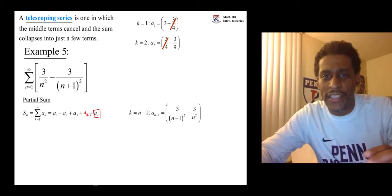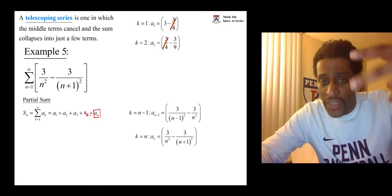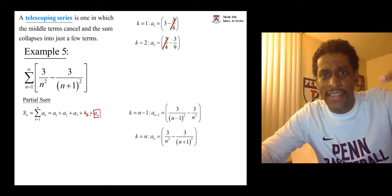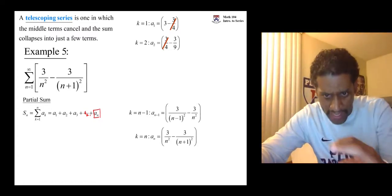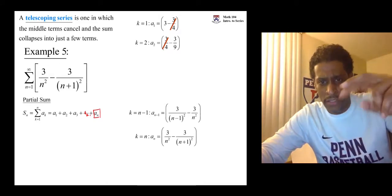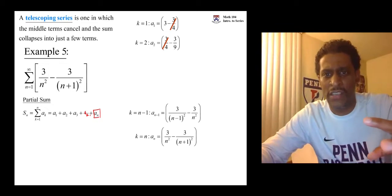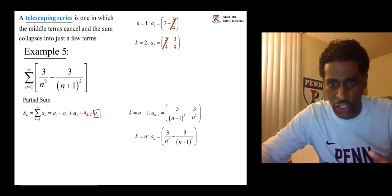So what you do basically is if it took you two terms to get your cancellation, your first cancellation, then at the end, when you add up a sub n, there's the end of it. A sub n is the end. And you're going to need two terms there to see where the end of the cancellation is.